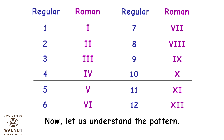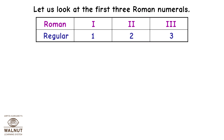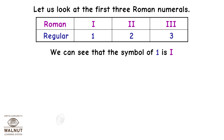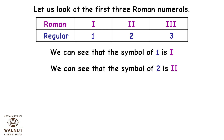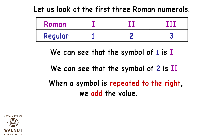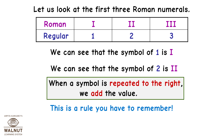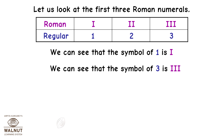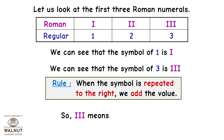Now let us understand the pattern. Let us look at the first three Roman numerals. We can see that the symbol of 1 is I. The symbol of 2 is two I's. When a symbol is repeated to the right, we add the value — this is a rule you have to remember. So two I's mean 1 plus 1, which is equal to 2. The symbol of 3 is three I's, so 1 plus 1 plus 1 equals 3.